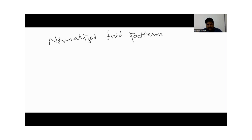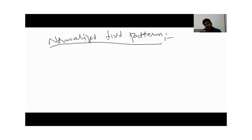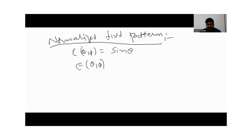What is the definition of normalized field pattern? The normalized field pattern is obtained by dividing the field component by its maximum value. For example, E(θ,φ) — let us consider its value is sine theta. The maximum value of sine theta is 1.